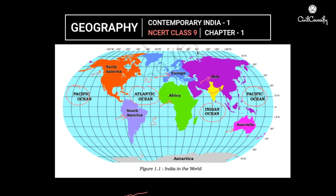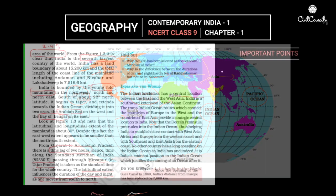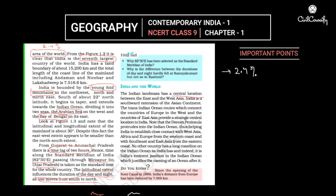When we talk about India, we must note that 82 degrees 30 minutes east is the standard meridian of the country. We should also know the locations of continents and other countries to the west and east of India — this is important for a strong grip on geography. India's geographical area is 2.4% of the entire world, making it the 7th largest country in the world.